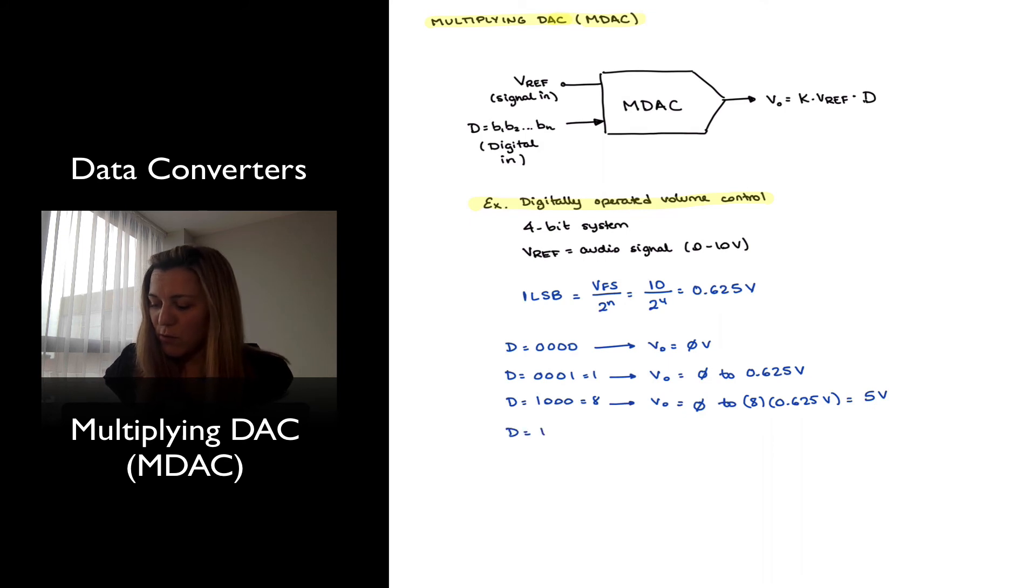And finally, when my digital word is 1111, which is essentially equal to 15 in digital form, my Vout is going to vary from 0 to 15 times 0.625 volts, which is going to be my full-scale range, my true full-scale range, meaning 10 volts minus 1 LSV, which is 9.375 volts.